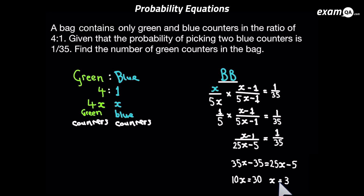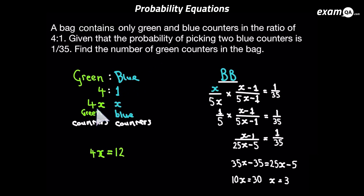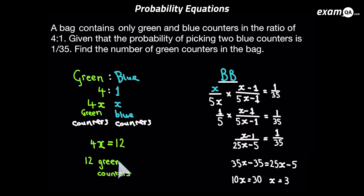Now if we go back to the question, it wanted us to work out how many green counters are in the bag. We know there's 4x amount of green counters, so if x equals 3, we can say 4x is 12. So there are 12 green counters. And that question wasn't too bad.